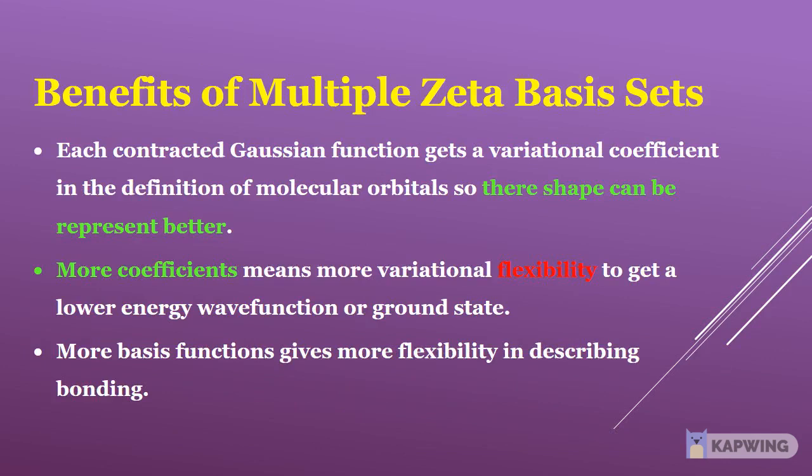Each contracted Gaussian function gets a variational coefficient in the definition of molecular orbitals, so their shape can be represented better. More coefficients means more variational flexibility to obtain a lower energy wave function or ground state. More basis functions gives more flexibility in describing bonding.